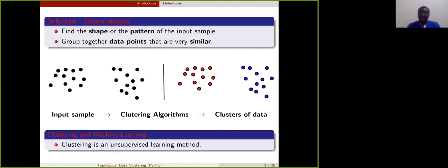Clustering analysis is about finding the shape or the patterns of the input data. In clustering analysis, we wish to group together data points that are very similar. For example, here we have the red cluster and the blue one.